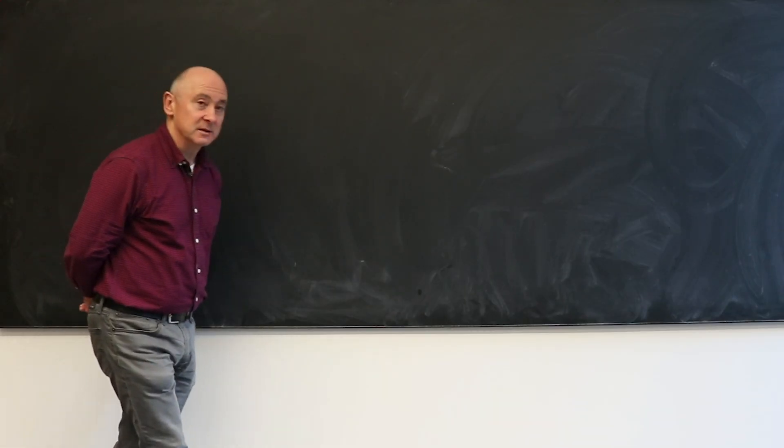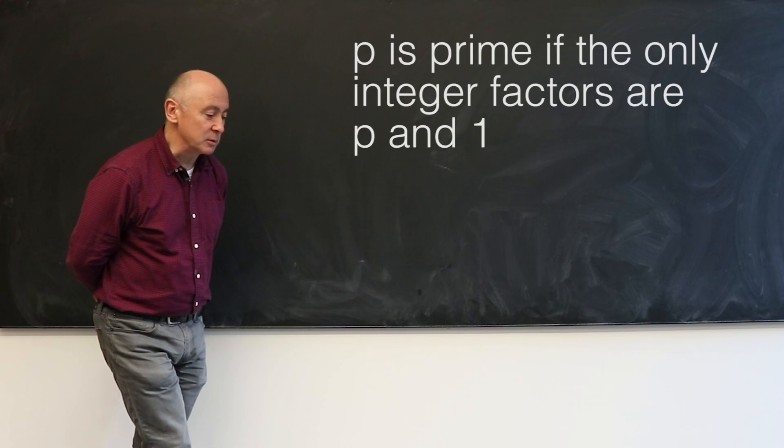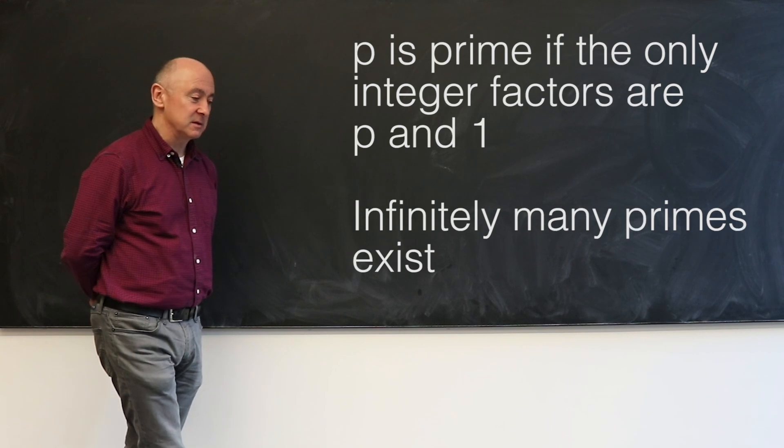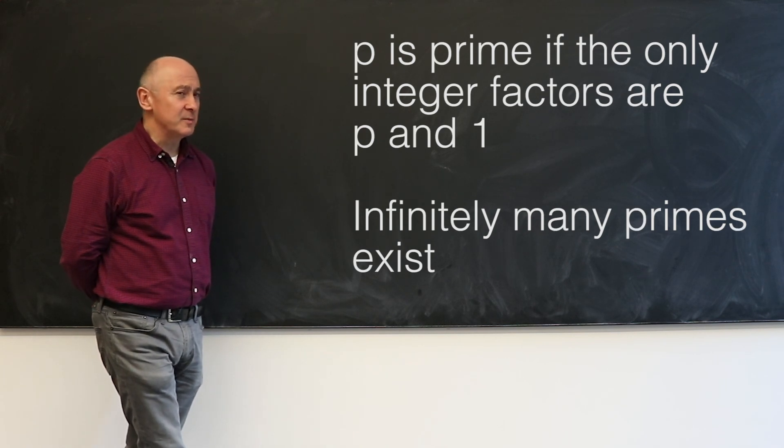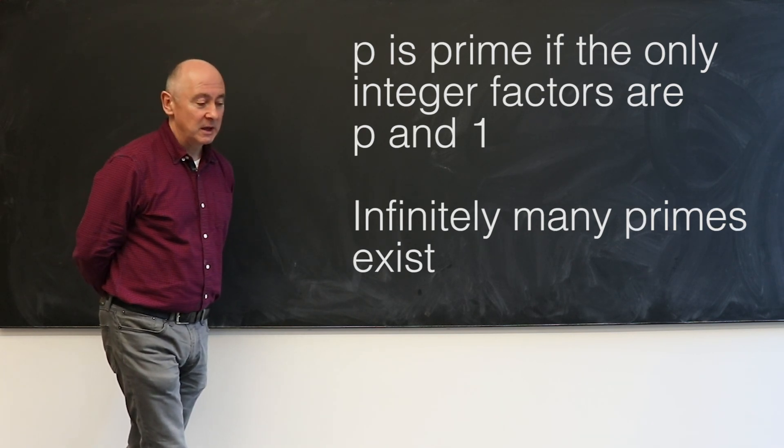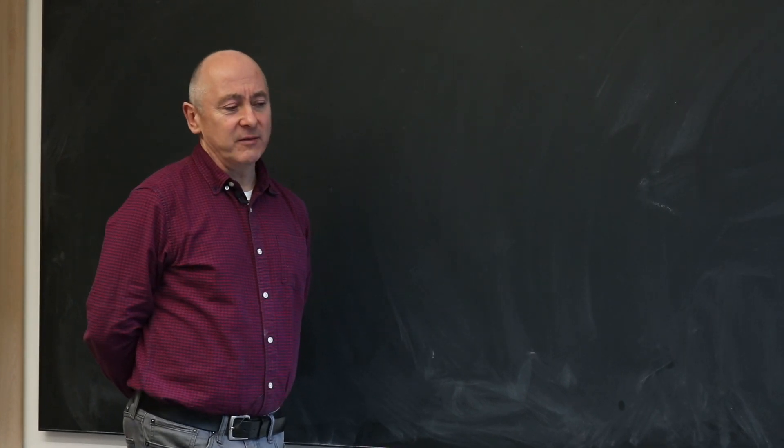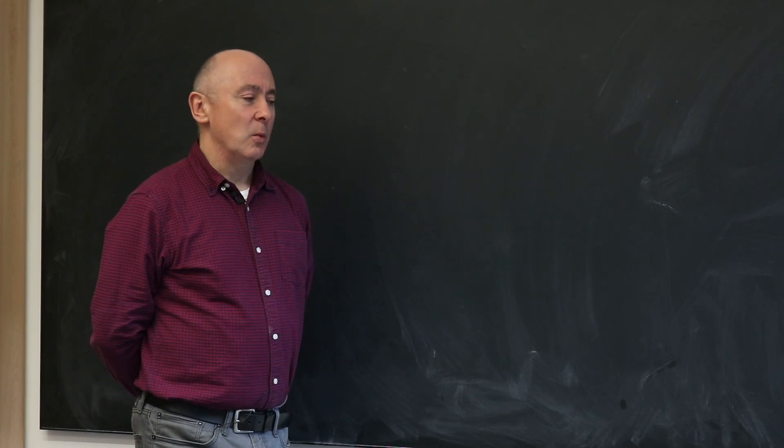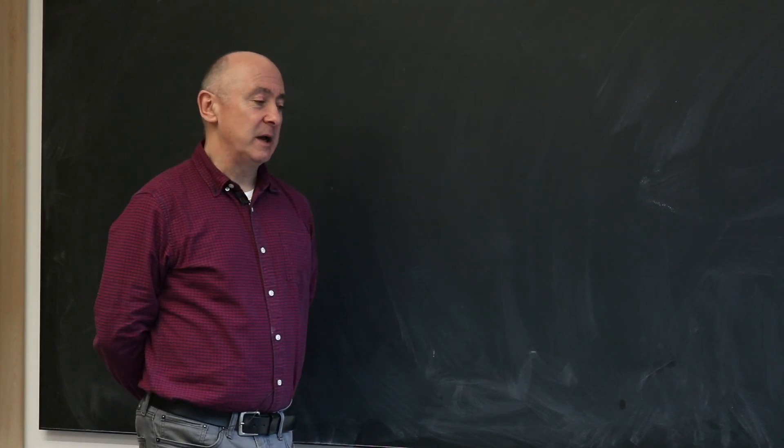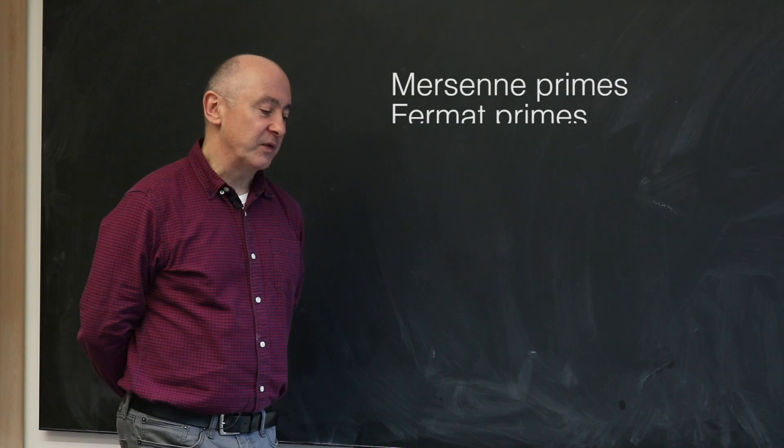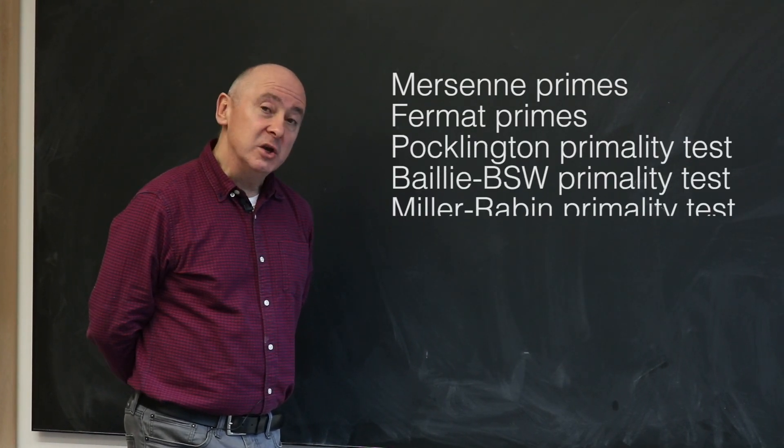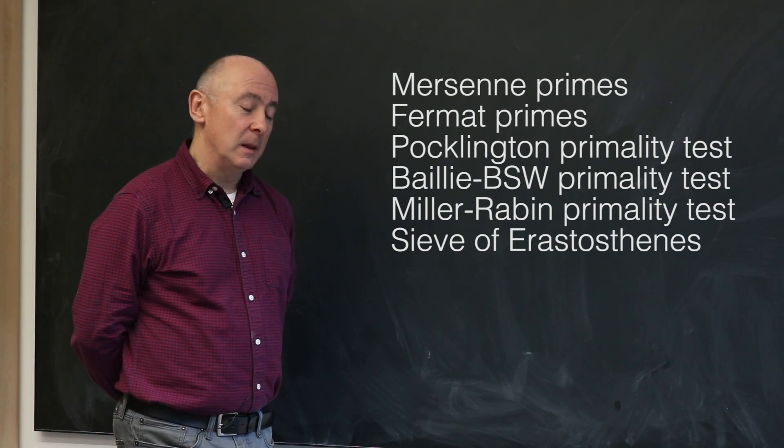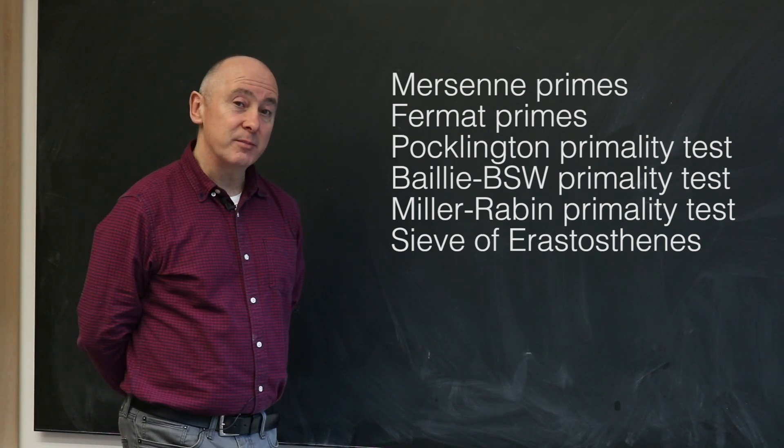Prime numbers, as everyone will know, are numbers divisible only by themselves and one, and we know there are infinitely many of those. But there's a huge amount we don't know about the primes, and a lot of mathematics that involves primes is still extremely difficult to us. We can find prime numbers with computers, but we don't have a good method for breaking numbers up in terms of their prime factors.